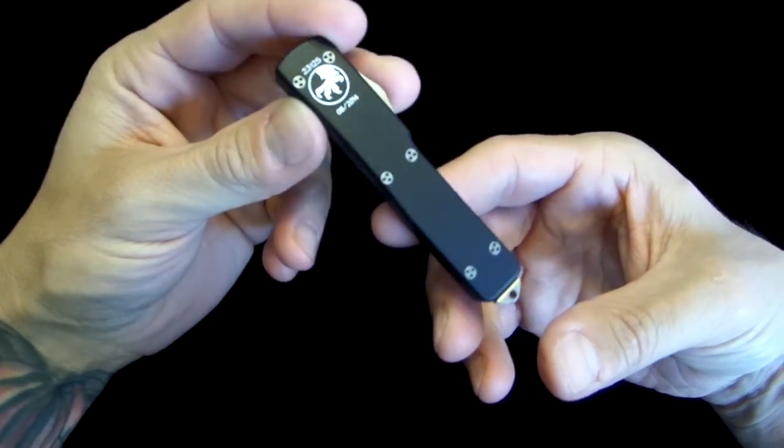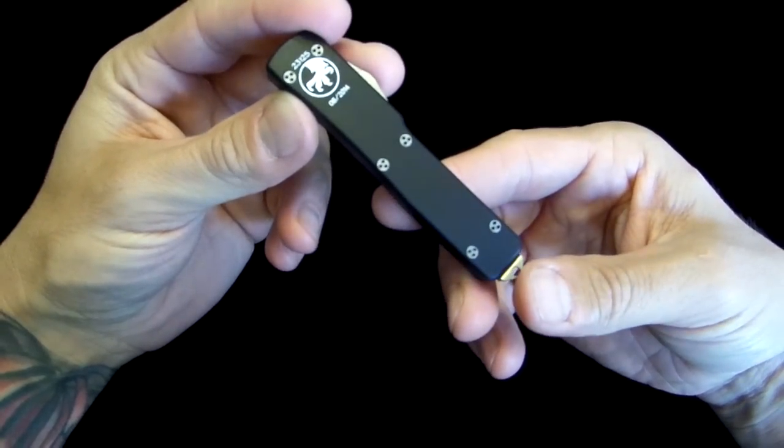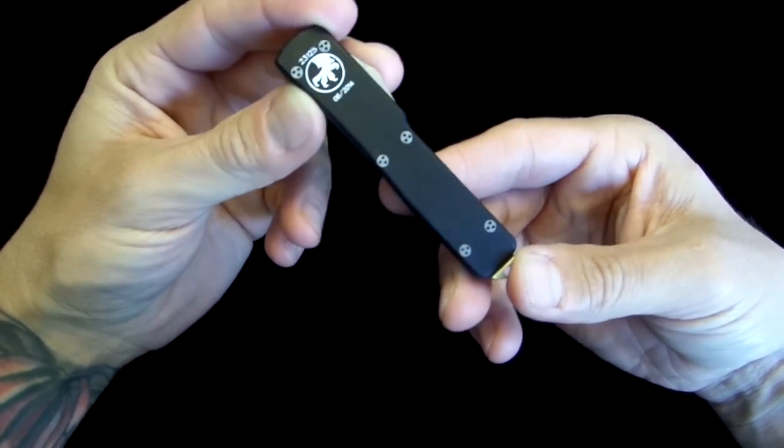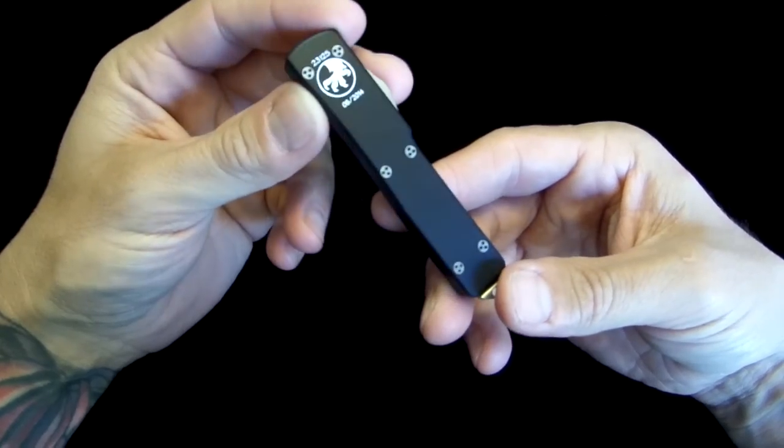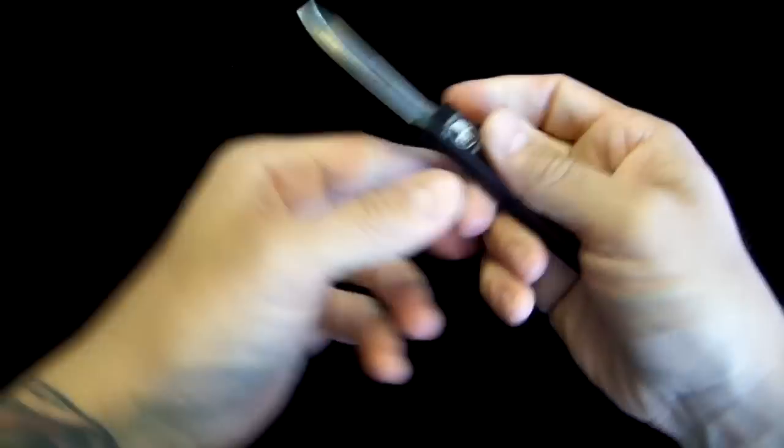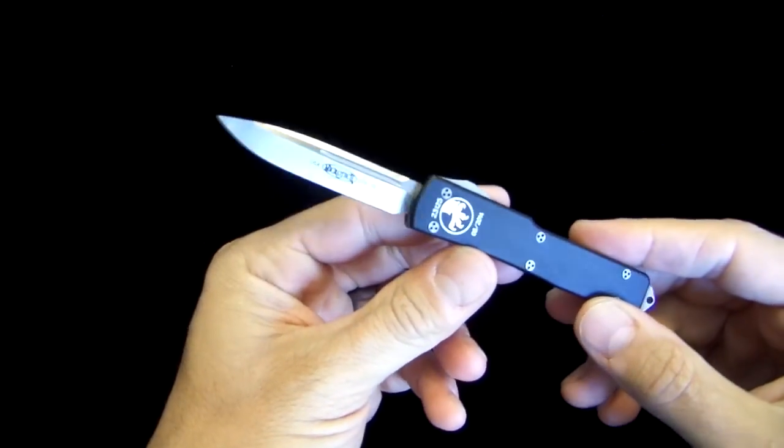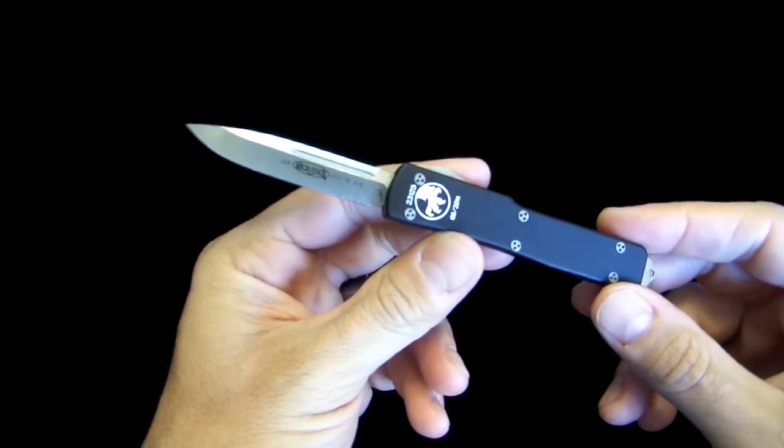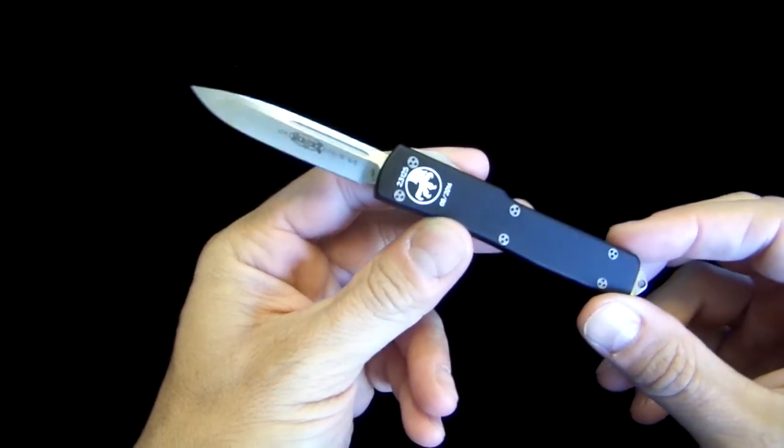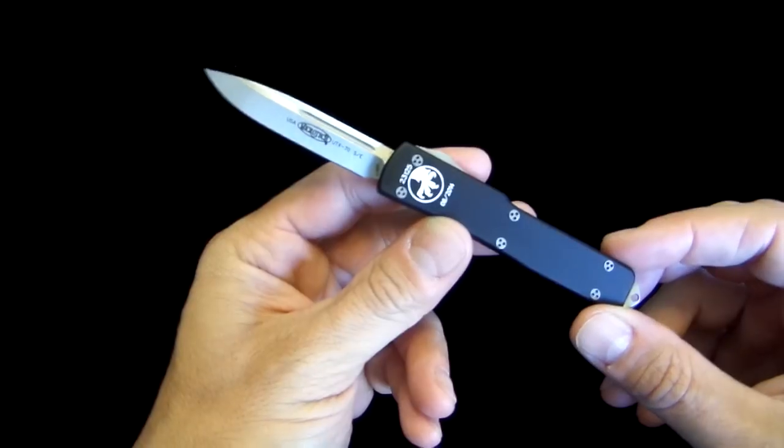This little sucker is a little over five and a half inches long overall. As you can see, it's real small. The handle length on it is 3.2 inches. The blade is 2.4 inches.